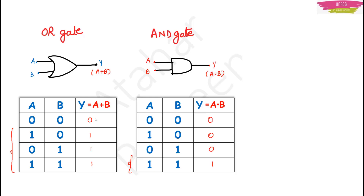Now let's talk about the AND gate. This is the symbol of the AND gate. In the same manner, instead of adding the inputs like in OR, now we multiply them. If input is 0 and 0, output is 0. If input is 1 and 0, output is 0. If both inputs are 1, meaning both inputs are high, then output will be 1. This is your AND gate.